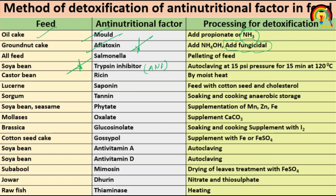Castor bean contains ricin. Lucerne contains saponin. Sorghum contains tannin. Soyabean also contains phytate. This is an important table — questions have been asked in RPSC food safety officer and Rajasthan food safety officer exams. You have to memorize which food contains which anti-nutritional factor because direct questions come from it.